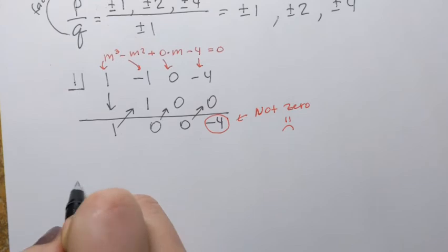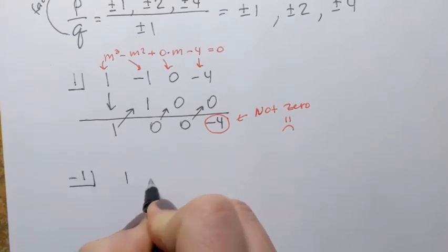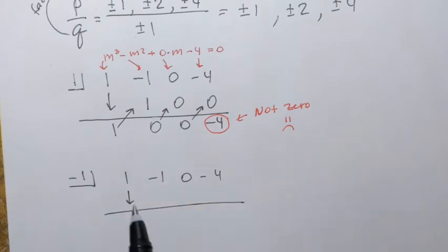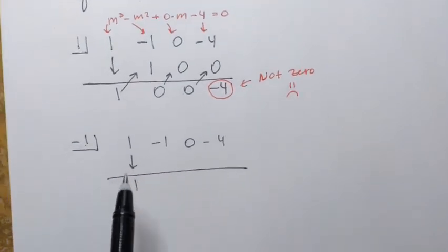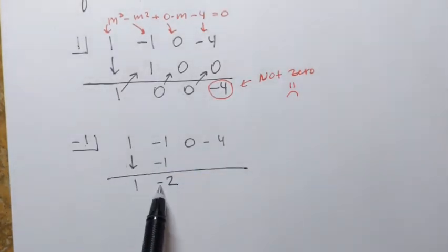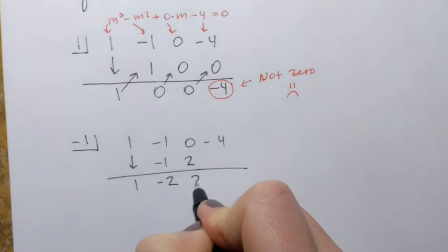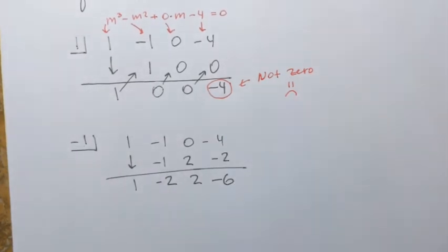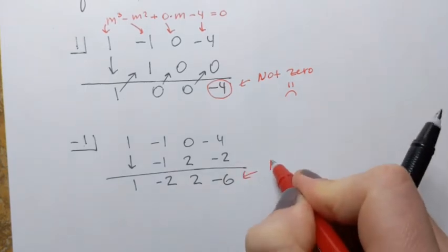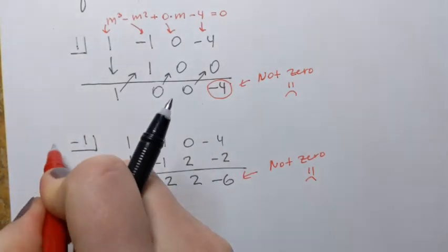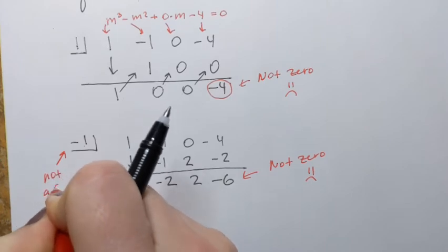So we need to keep going. Let's test negative 1. The coefficients are 1, negative 1, 0, negative 4. Bring down 1. Negative 1 times 1 is negative 1; add to get negative 2. Negative 1 times negative 2 is positive 2; add to get 2. Then negative 1 times 2 is negative 2; add to get negative 6. Again, not 0 — so negative 1 is not a solution.